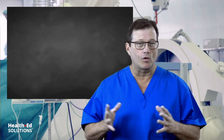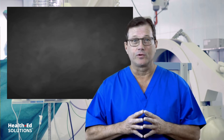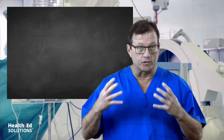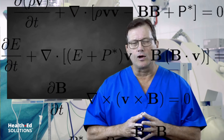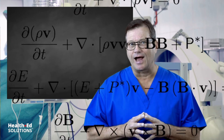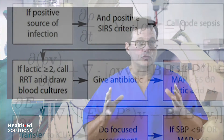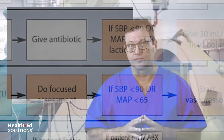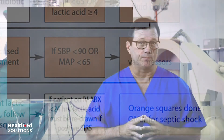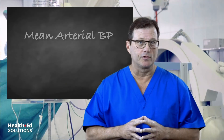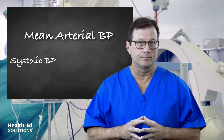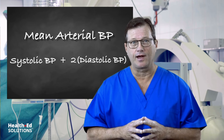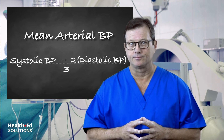What are we going to use this for? We use it in other formulas to calculate other pressures throughout the body. We also use it as a guideline in certain treatment algorithms, like the sepsis algorithm, for example. So, mean arterial blood pressure: systolic plus two times the diastolic, divided by three.